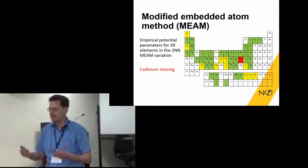There's a variation called the second nearest neighbor MEAM for which we have potential parameters for 39 elements. When creating different compounds from the periodic table, we have a decent number to choose from. But for anyone who does PAC, you'll notice there's an atom missing—cadmium. The purpose of this work is to develop a potential parameter set for cadmium.